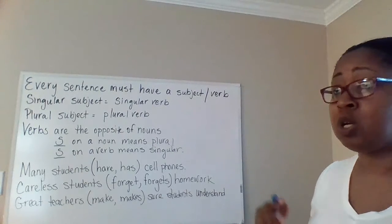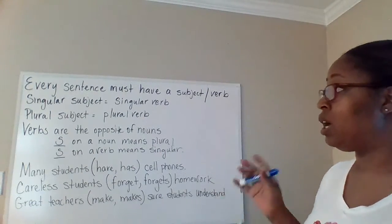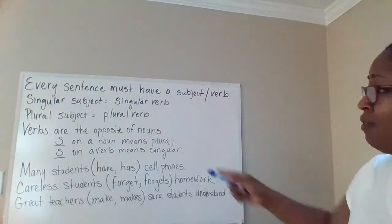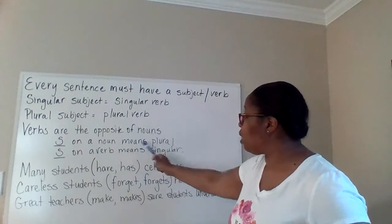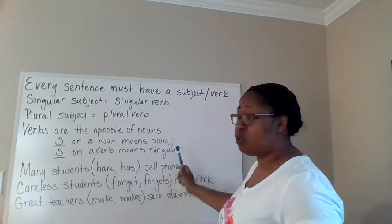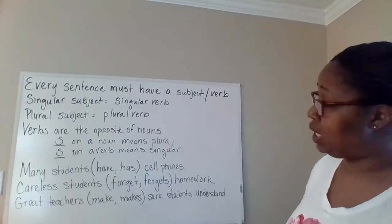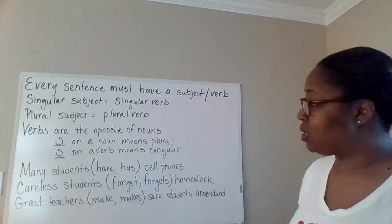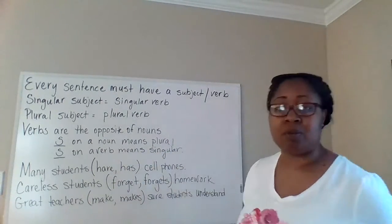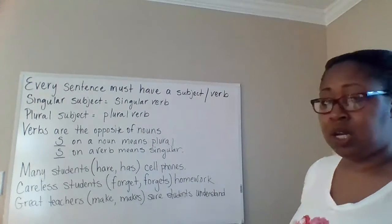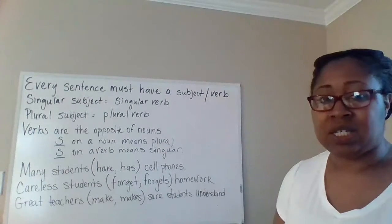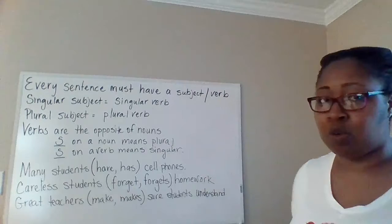One of the things you can remember to help cue you when you're working on these is that verbs are the opposite of nouns. What I mean by that is when you put an S on a noun, it means that that noun is plural. But when you put an S on a verb, it means that that verb is singular. Again, verbs are the opposite of nouns. An S on a noun means that the noun is plural, but an S on a verb means that that verb is singular. So let's look at some examples and decide which verb we need to use.